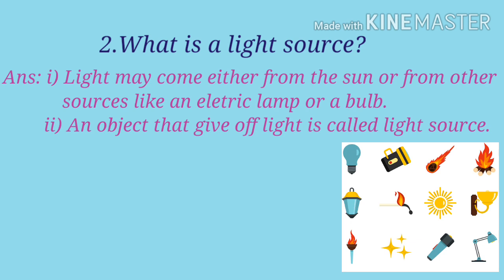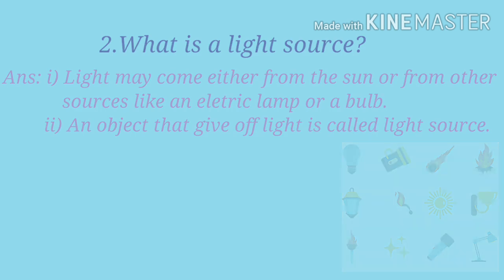Again I am reading from the beginning. What is a light source? Light may come either from the sun or from other sources like an electric lamp or a bulb. An object that gives off light is called light source.